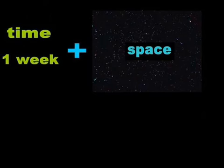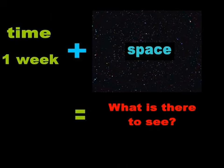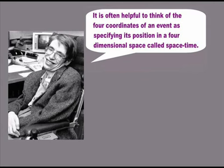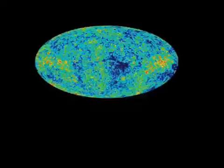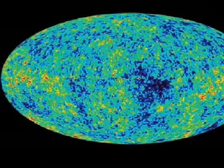This may explain why Hawking cannot even imagine the globe he claims to inhabit. It is often helpful to think of the four coordinates of an event as specifying its position in a four-dimensional space called space-time. It is impossible to imagine a four-dimensional space. What is it that is preventing Hawking from watching a movie of an expanding balloon?